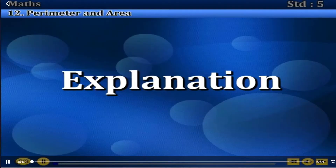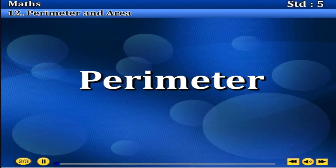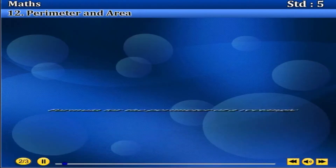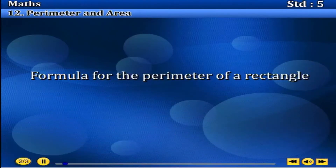Twelfth. Explanation. Perimeter. Closed figures have a perimeter. We know that the sum of the length of all the sides of a figure is called its perimeter. Formula for the perimeter of a triangle.